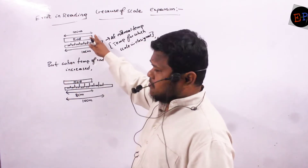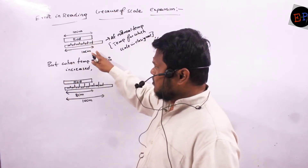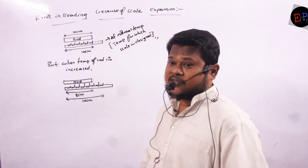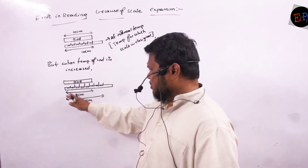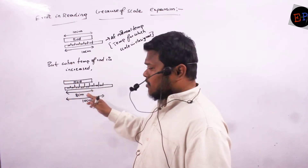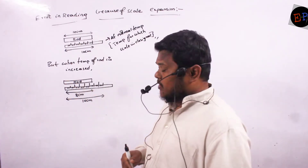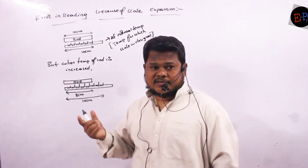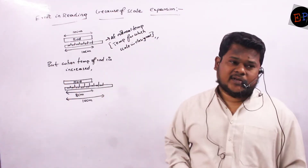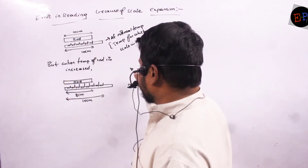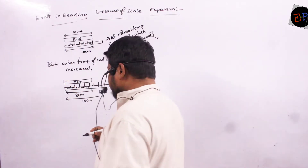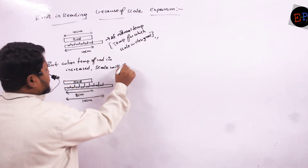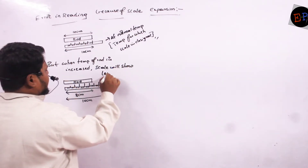So actually, the length of the rod is 10 cm. At normal temperature it should show a reading of 10 cm. But because the temperature of the scale is increased, the scale will always show a lesser reading. Why does the scale show a lesser reading? Because the scale has expanded, so the reading will be less when compared to the actual reading.